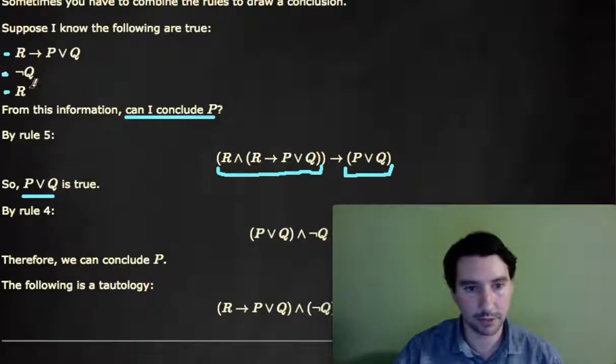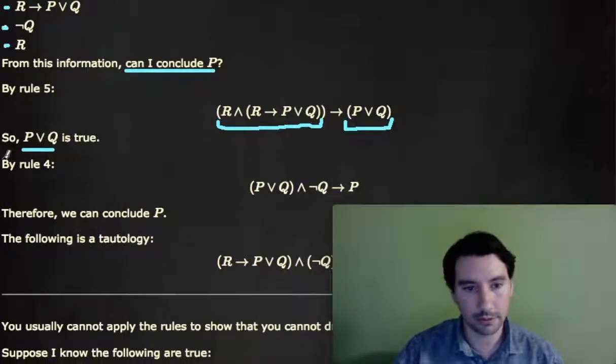R implies P or Q, I have not Q, R, and now I also know P or Q. Well, combining the statements P or Q and not Q, that tells me by rule 4, P is true. Because I know P or Q is true, and that Q is false, therefore, P must be true.